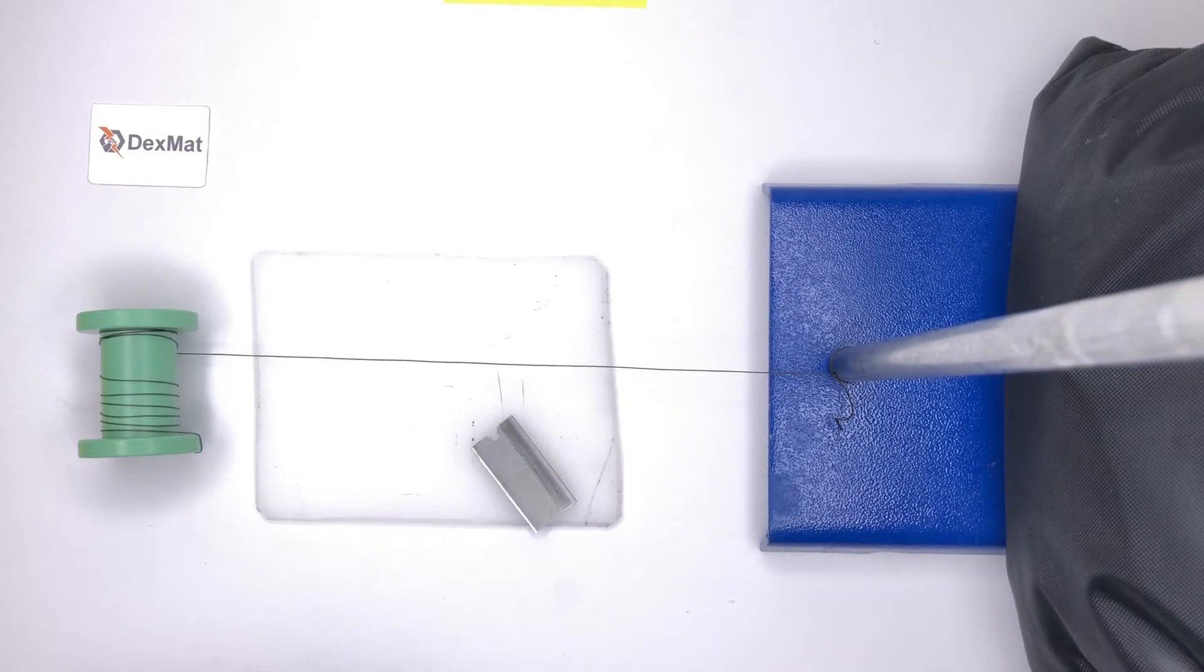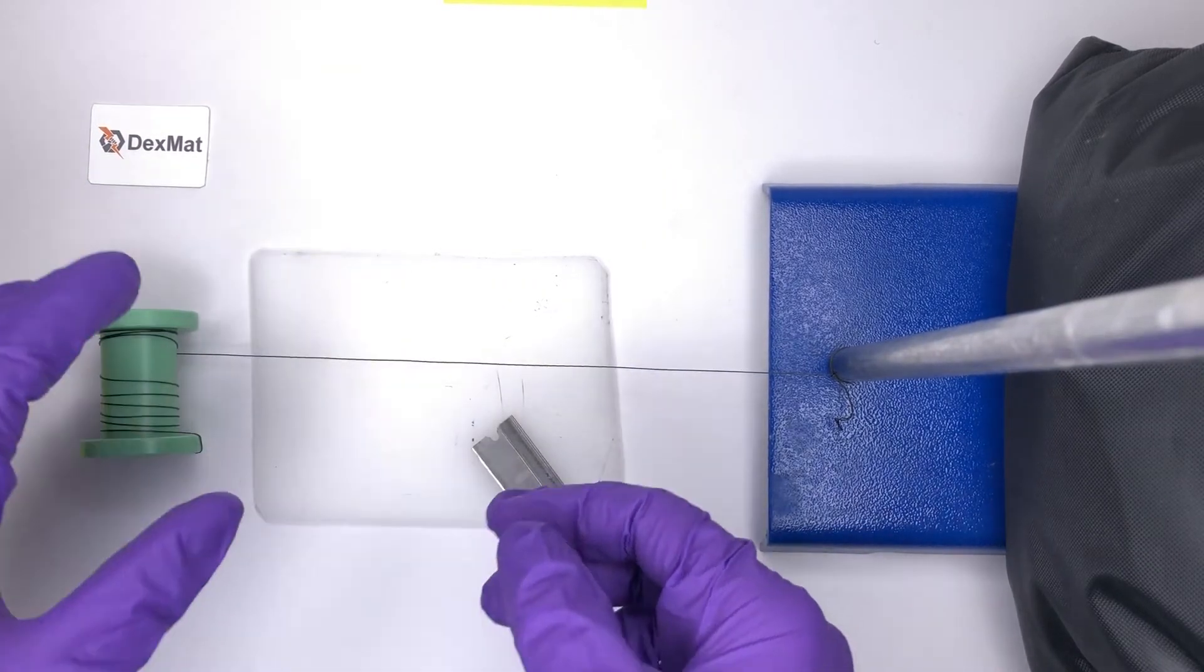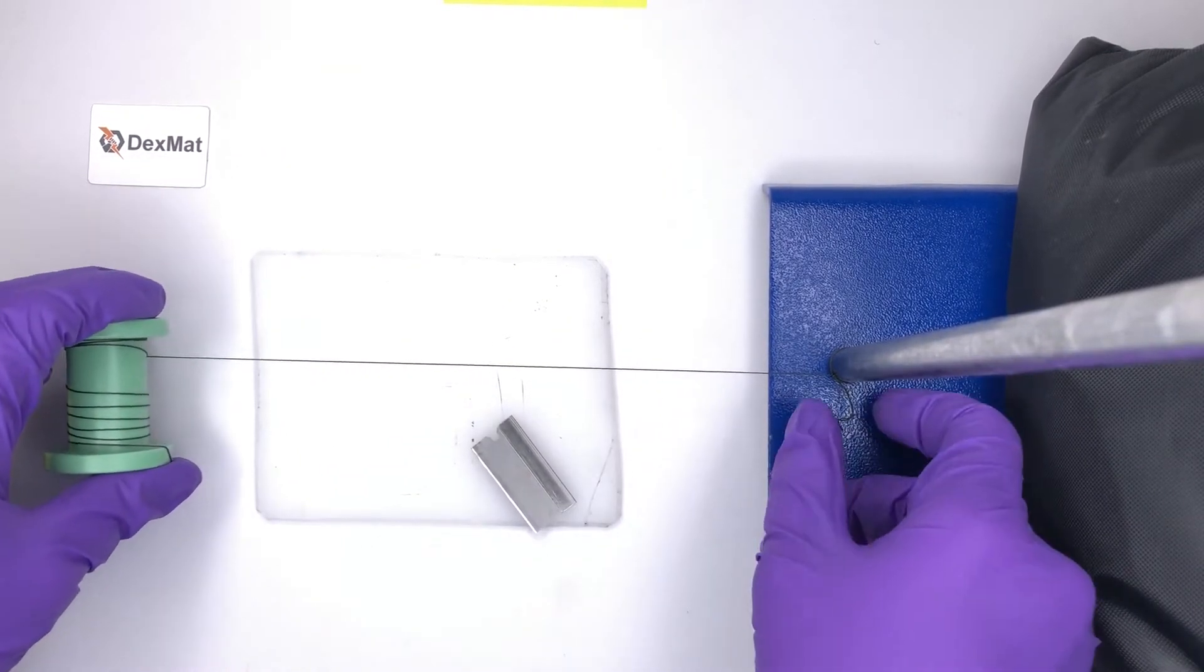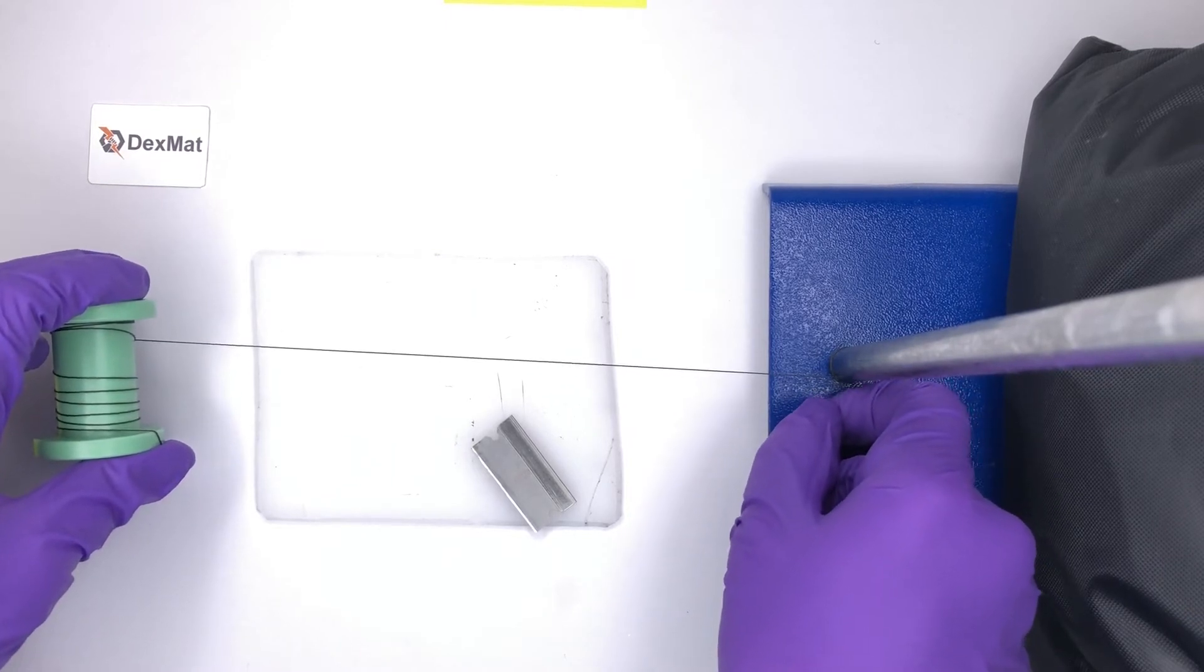The best method we've discovered for cutting these carbon nanotube yarns is to put them under tension, which I've done here by double knotting the yarn onto this pole.